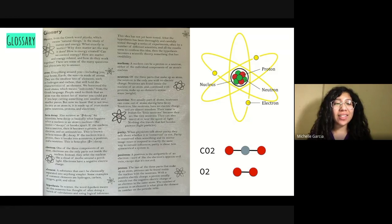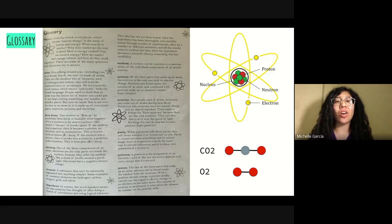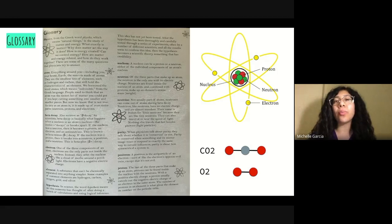Hypothesis. In science, the word hypothesis means an idea someone has thought of after doing a bunch of calculations and using logical inference. This idea has not yet been tested. After the hypothesis has been thoroughly and carefully tested through a series of experiments, often by a number of different scientists, and all the results seem to confirm this idea, then the hypothesis becomes a scientific theory, something that has credibility, or something that is believable. So essentially what this definition is trying to tell us is that a hypothesis is what you think is going to happen in an experiment. So you go into your experiment, and you see if your evidence confirm or do not confirm what you think is going to happen. Or in other words, you want to see if your data support or do not support your hypothesis, what you think is going to happen.